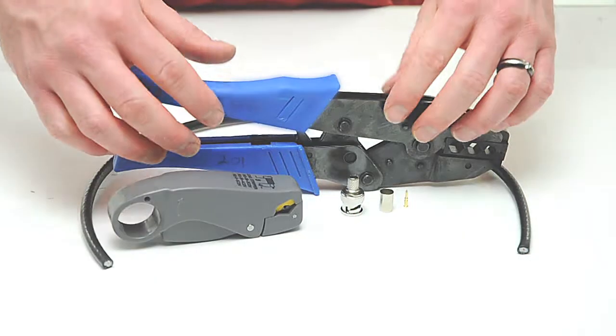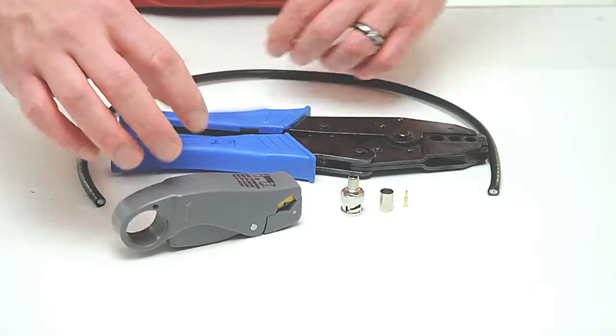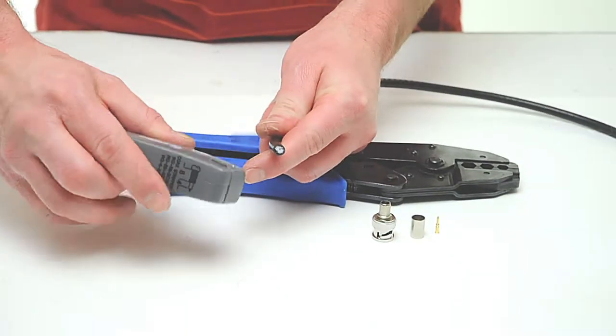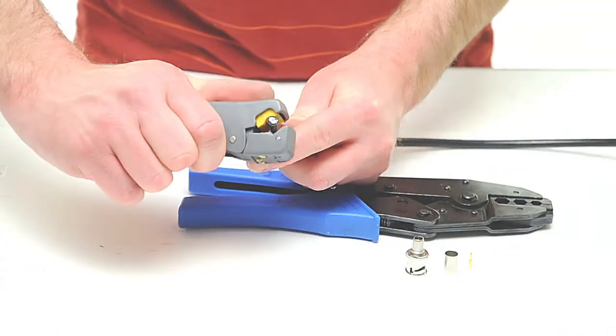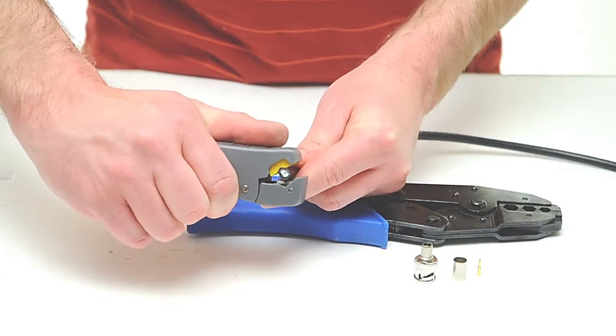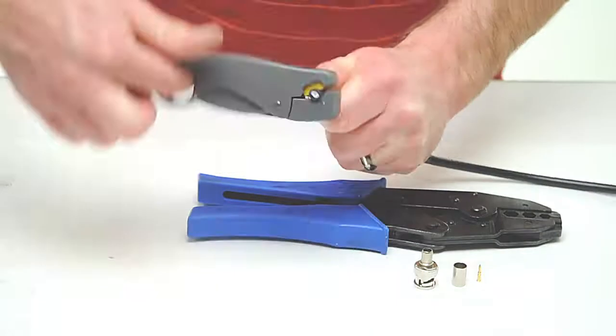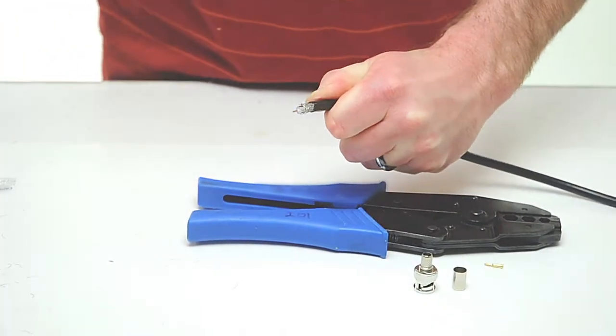To begin, take your coax stripper and remove the outer jacket and dielectric of the cable. The advantage of using a coax stripping tool is that it cuts both the outer jacket and dielectric at the same time. Rotate the tool a few times around the outside of the cable and peel the jacket off.